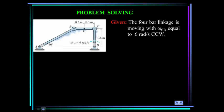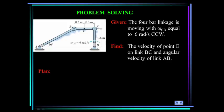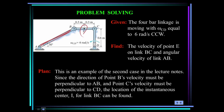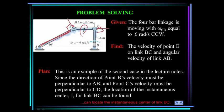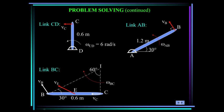Here's another problem. This 4-bar linkage is moving with omega_CD equal to 6 radians per second counterclockwise. Find the velocity of point E on link BC and the angular velocity of link AB. This is an example of the second case, since the direction of point B's velocity must be perpendicular to link AB, and the velocity of C is perpendicular to link CD, so we can locate the IC. Looking at link CD first: omega_CD is 6 radians per second, so the velocity of C is 0.6 times 6, or 3.6 meters per second.